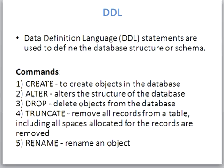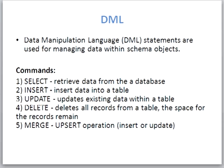The fourth one is TRUNCATE. TRUNCATE is used to remove all the records or rows present in the table. But with the help of the TRUNCATE command, the structure will not be deleted — it will remain the same. Only the records or rows in the table will be deleted. The last one is RENAME. With the help of the RENAME command, we can rename an object.